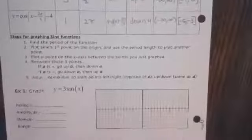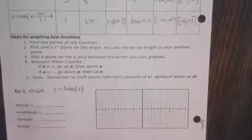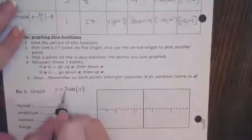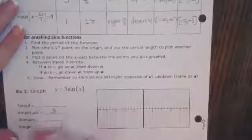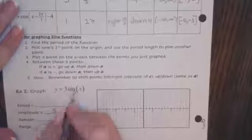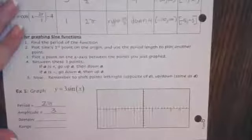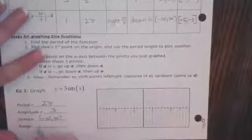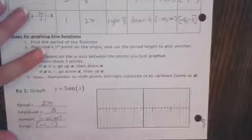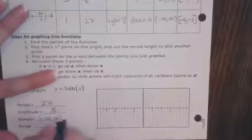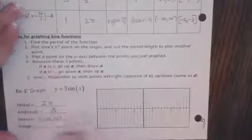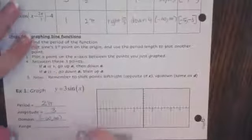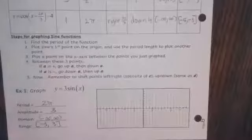Here is our first graph: y equals three times the sine of x. The three is in the place of A, so our amplitude has changed to three. There is nothing in the place of B, so our period is still two pi, just like the parent function. Our domain is all real numbers, and our range is going to go from negative three to three, because we go down three and up three from our center at zero.